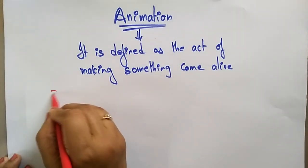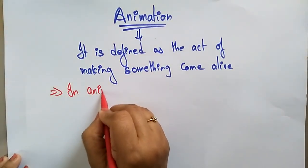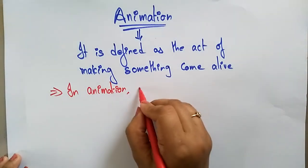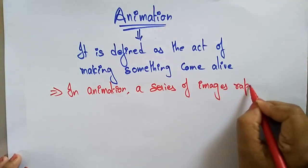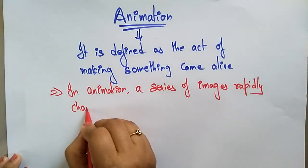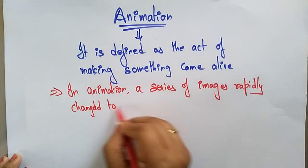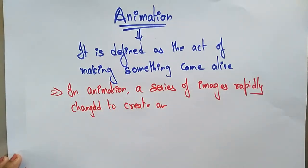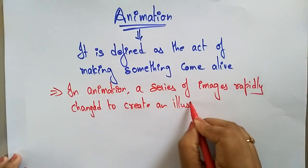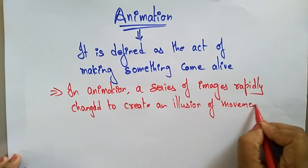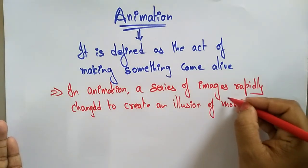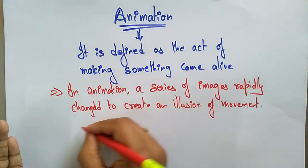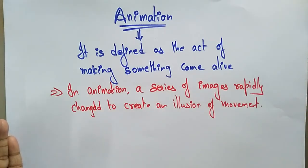In animation, a series of images rapidly change to create an illusion of movement — that is animation. How do pictures appear to run or move? Suppose any picture wants to walk on the road — how is this going to be done? It is just a picture, it doesn't actually have any life, but the picture appears to be moving.